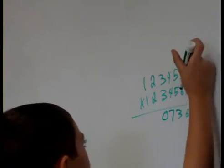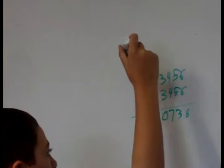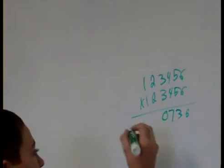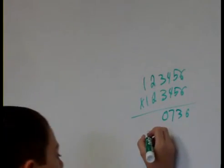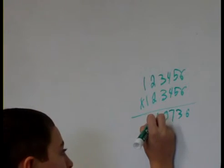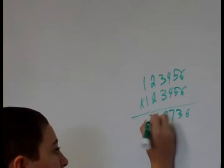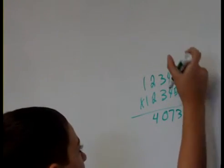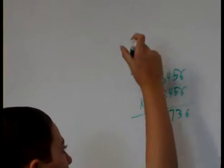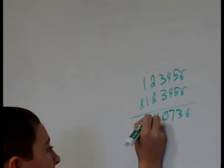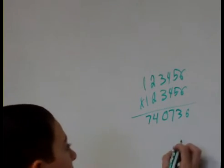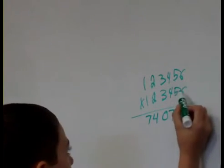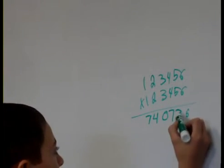And then, 6 times 3, which is 18, plus the 2 is 20. And then, 6 times 2 is 12, plus the 2 is 14. And then, 6 times 1 is 6, plus the 1 is 7. And then, you move it down to here, which we're multiplying.